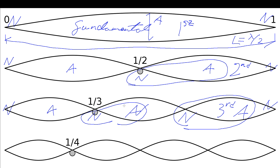We can work out the frequency of each of these harmonics. Between a pair of nodes is a half wavelength, so in the second harmonic we have a full wavelength — that's twice the frequency. In the third harmonic we have one and a half wavelengths, which is three times the frequency. So the fundamental mode frequency is f₀, the second harmonic is 2f₀, the third harmonic is 3f₀, the fourth is 4f₀, and so on — each higher harmonic is another integer multiple of f₀.